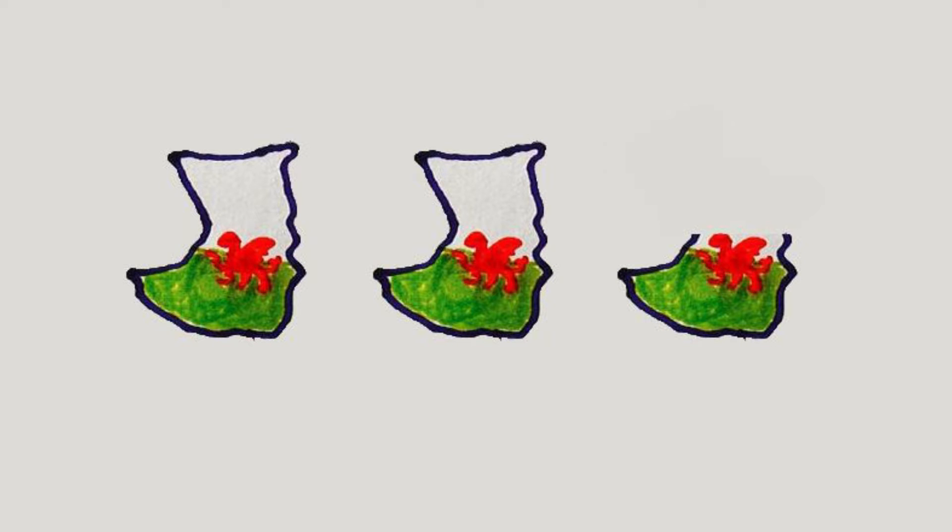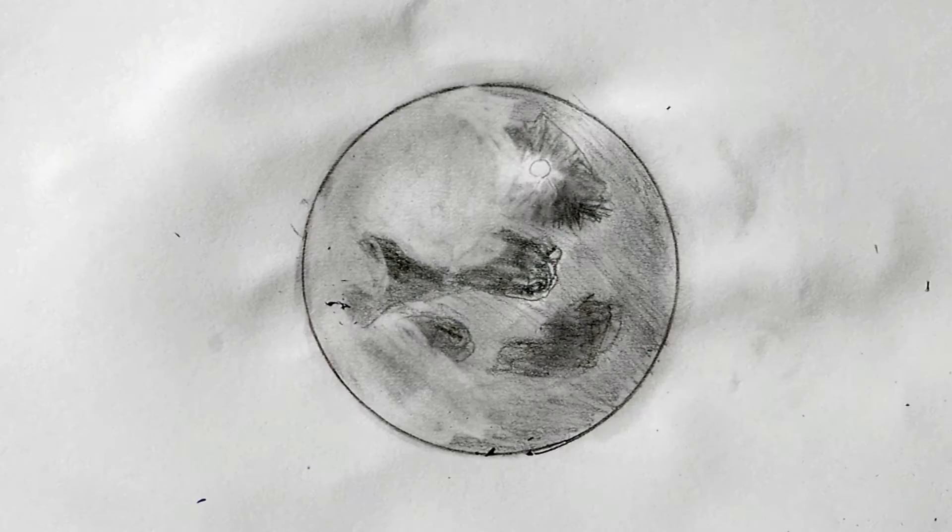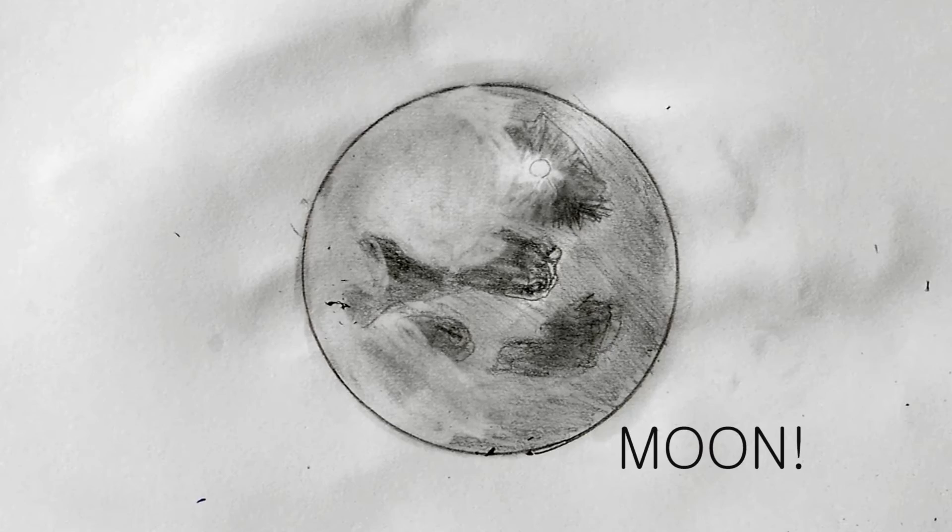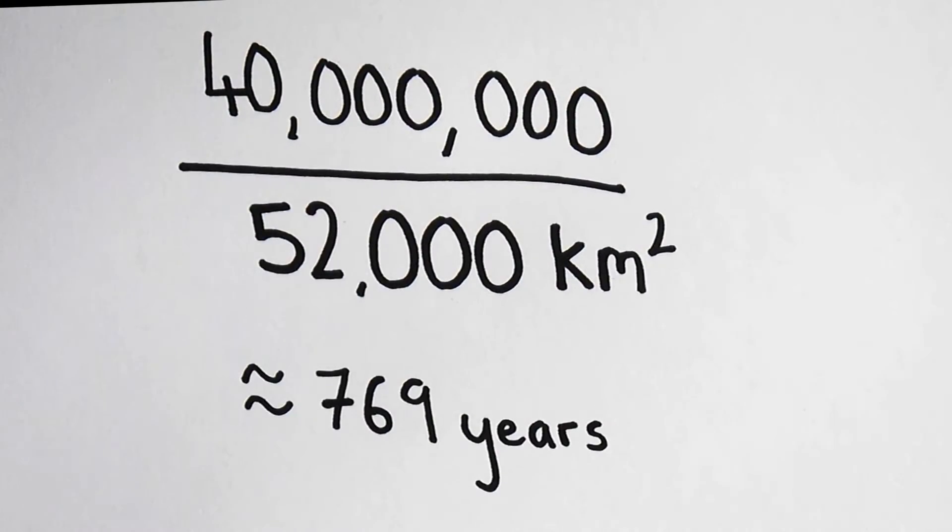This may seem like an alarming rate to be losing the world's forests, but let's put it into context. Forests cover around 40 million square kilometres of the planet, which is about the same as the surface area of the moon. If we do the maths, it says that we have over 750 years left of forest.